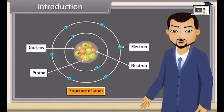Good question, Rakesh. As you know, all objects are made up of different materials like plastic, rubber, iron, etc. They have different arrangements and types of molecules. A molecule is a group of two or more atoms, so the fundamental unit is the atom.